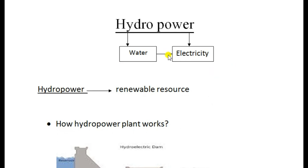First of all, let's talk about the meaning of hydropower. Hydropower relates to water and electricity. Hydropower is called a Renewable Resource. We will also talk about eco-friendly hydropower plants and pollution.